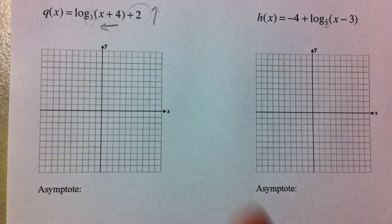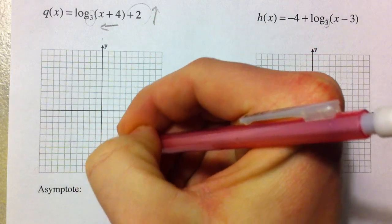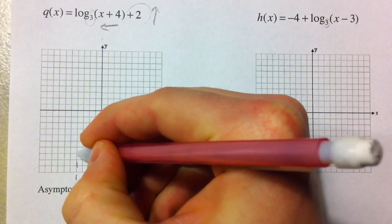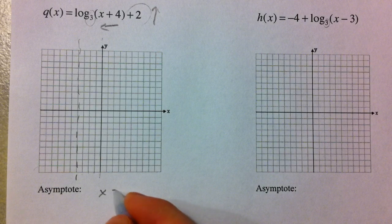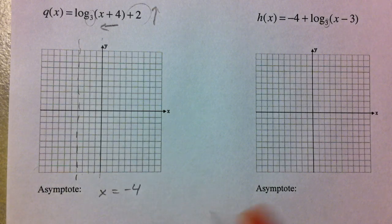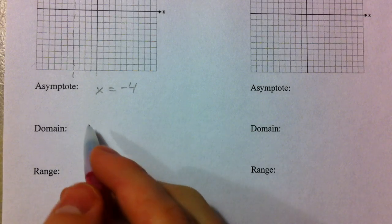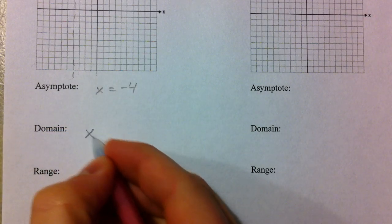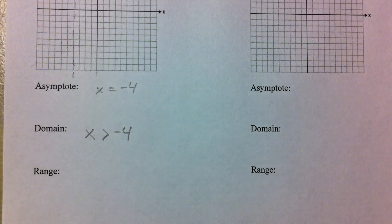So our asymptote was this vertical line at 0. However, now it shifted to the left 4, so we're 1, 2, 3, 4, now we've got an asymptote here at x equals negative 4. Our domain is shifted with that, and so we're going to get x is greater than negative 4. I'm sorry, I'll go back to the graph.